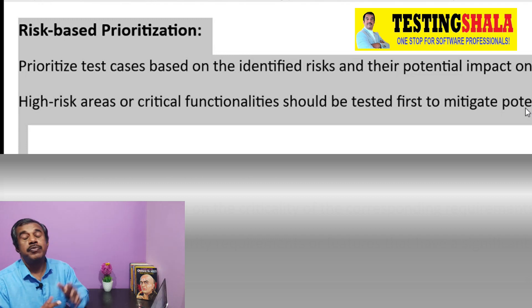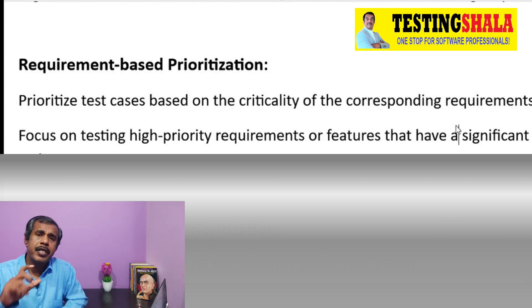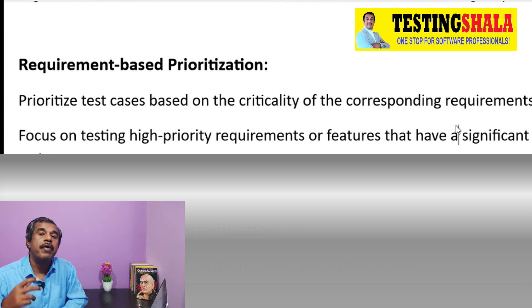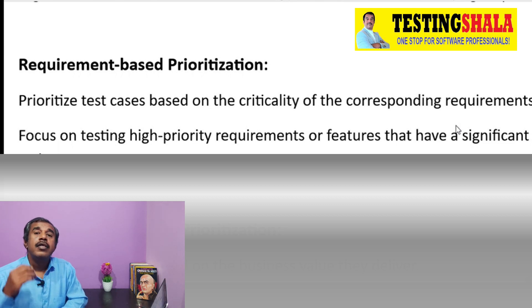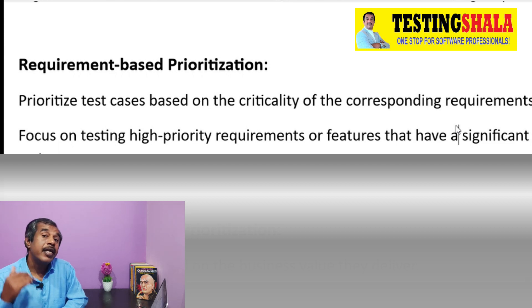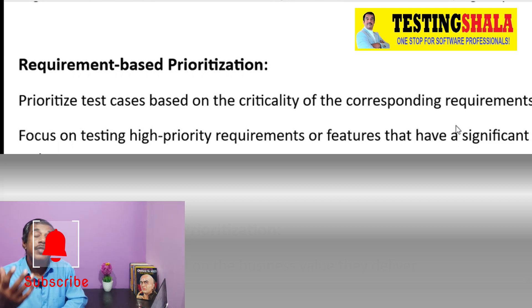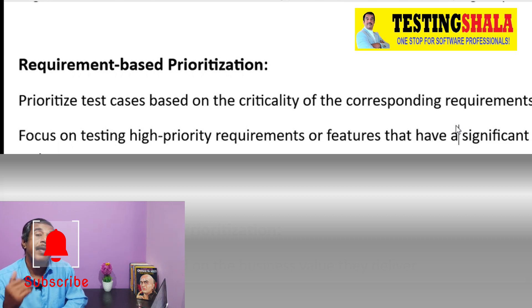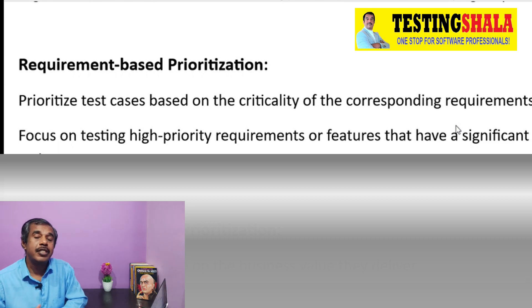The second type of prioritization is requirements-based prioritization, where test cases are prioritized based on how critical the requirements are to the customer. For example, in banking, money transfer, depositing money, and withdrawing money are key features that must be tested, so we should prioritize test cases for those features.